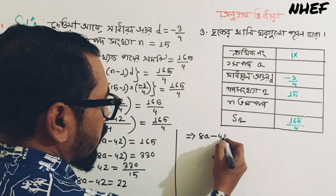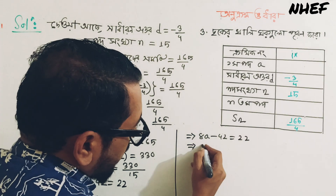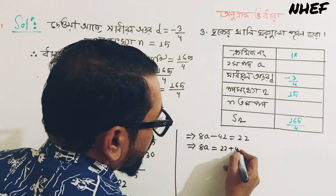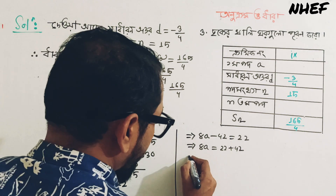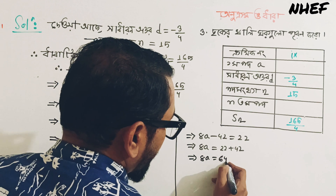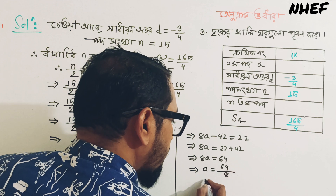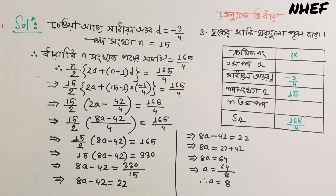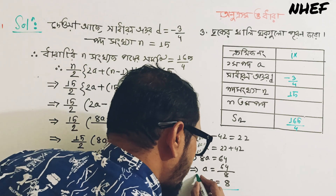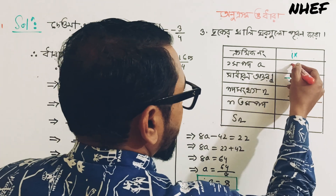16a minus 42 is equal to 22. So 8a minus 42: adding 42 to both sides gives 8a equal to 64. Therefore 8a is equal to 64, so a is equal to 64 divided by 8, which is 8. So the value of a is 8. The first term is 8.